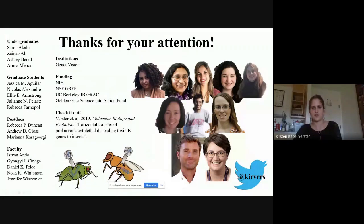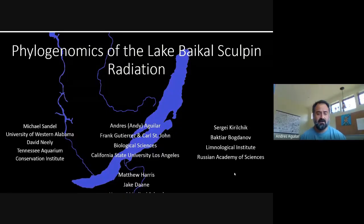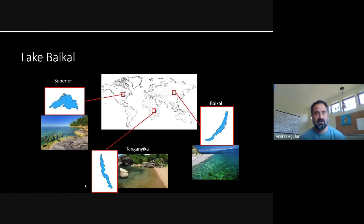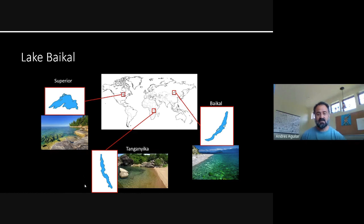I'm going to talk about ongoing work on the Lake Baikal sculpin adaptive radiation. There are many collaborators I'll acknowledge throughout. First, I need to introduce Lake Baikal — a very interesting place biologically but not well studied or well known. It is one of the great lakes, and I hope to convince you it is the greatest lake out there. Unlike the Laurentian Great Lakes of North America and the famous East African Rift Valley lakes for fish adaptive radiations, Baikal is nestled in the middle of Siberia.